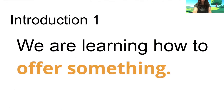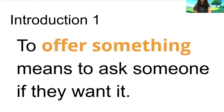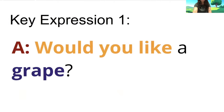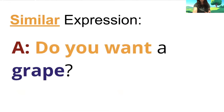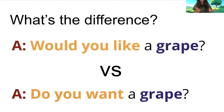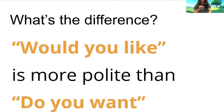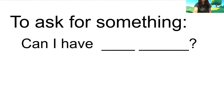Now let's learn the new dialogue in Chapter 2. We are learning how to offer something — to offer something means to ask someone if they want it. For example, 'Hey, would you like a grape?' Or, an expression you probably already know: 'Do you want a grape?' These expressions mean the same thing and can be used interchangeably. But 'would you like' is a little more formal or polite. I would use it with people older than me or people I just met. As a server in a restaurant, I would say 'Would you like some water?' instead of 'Do you want some water?'